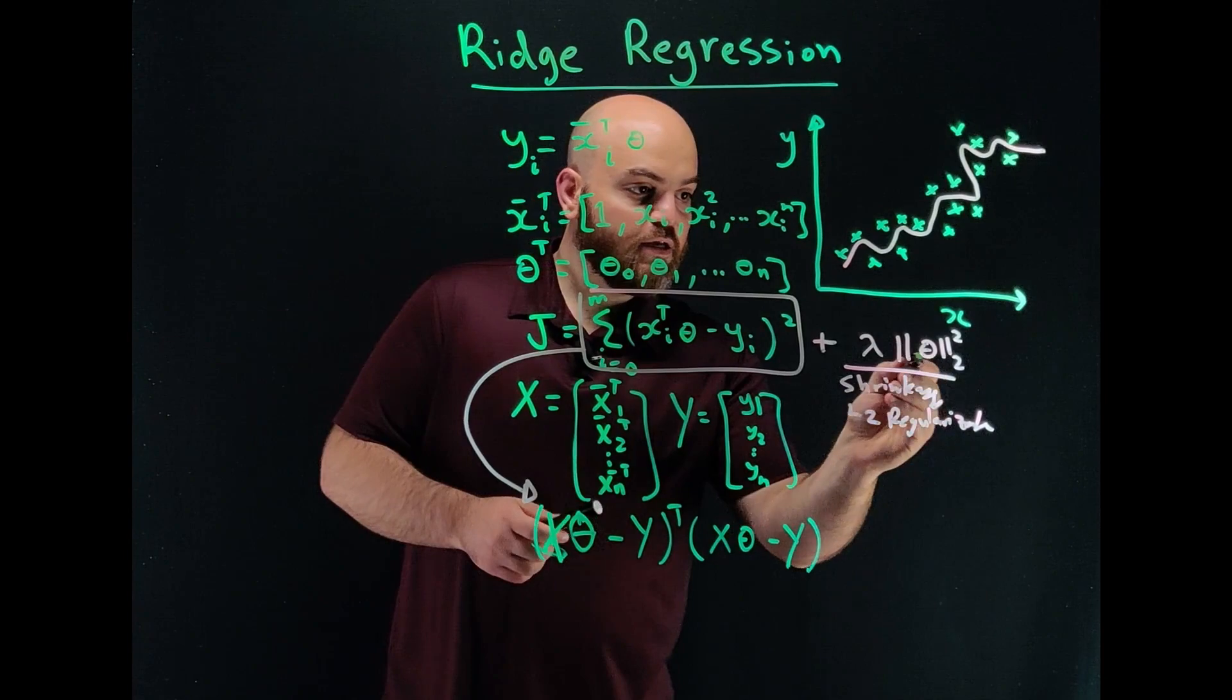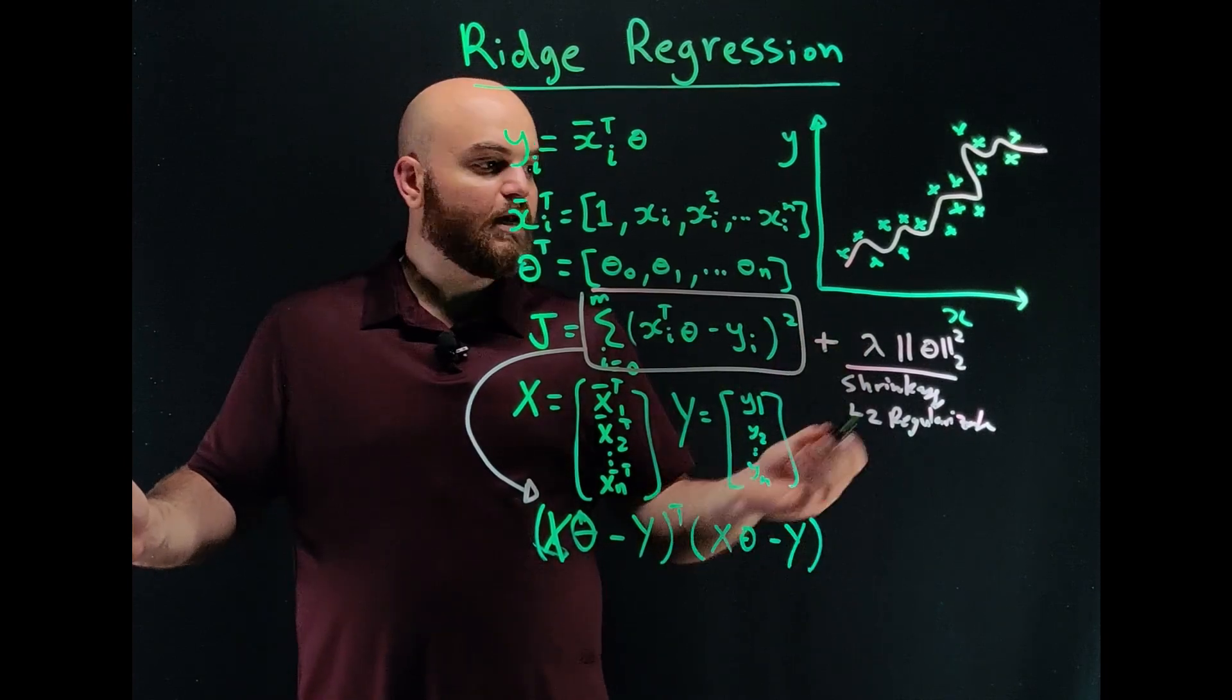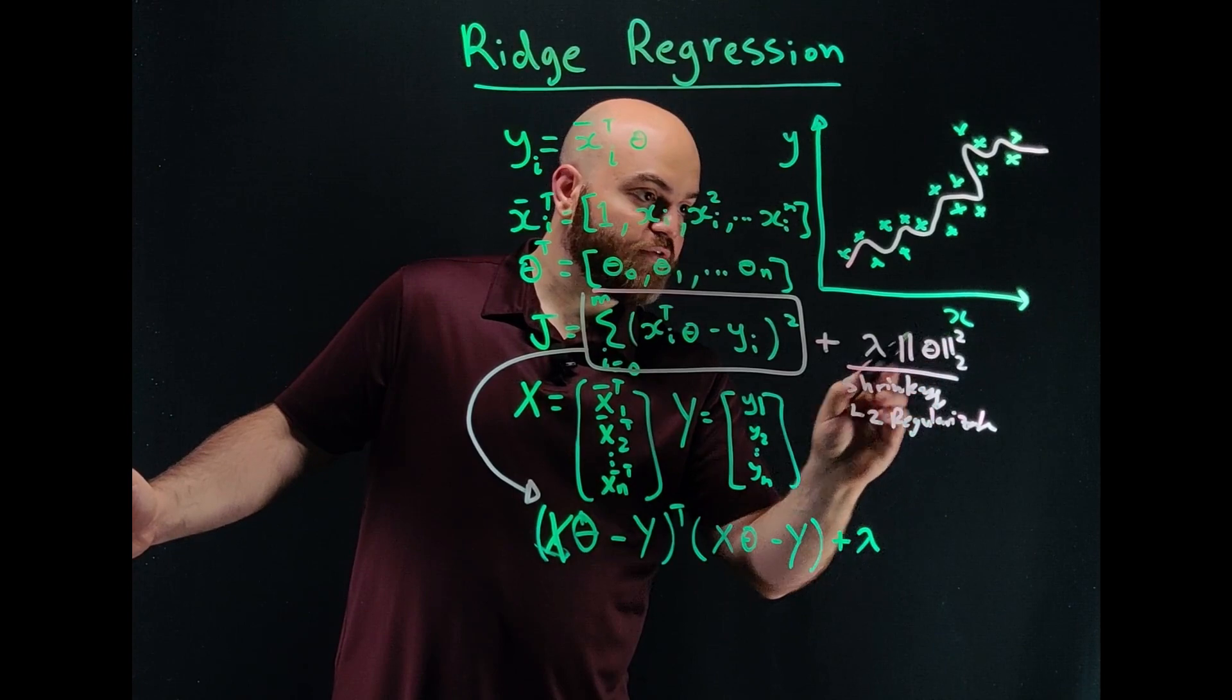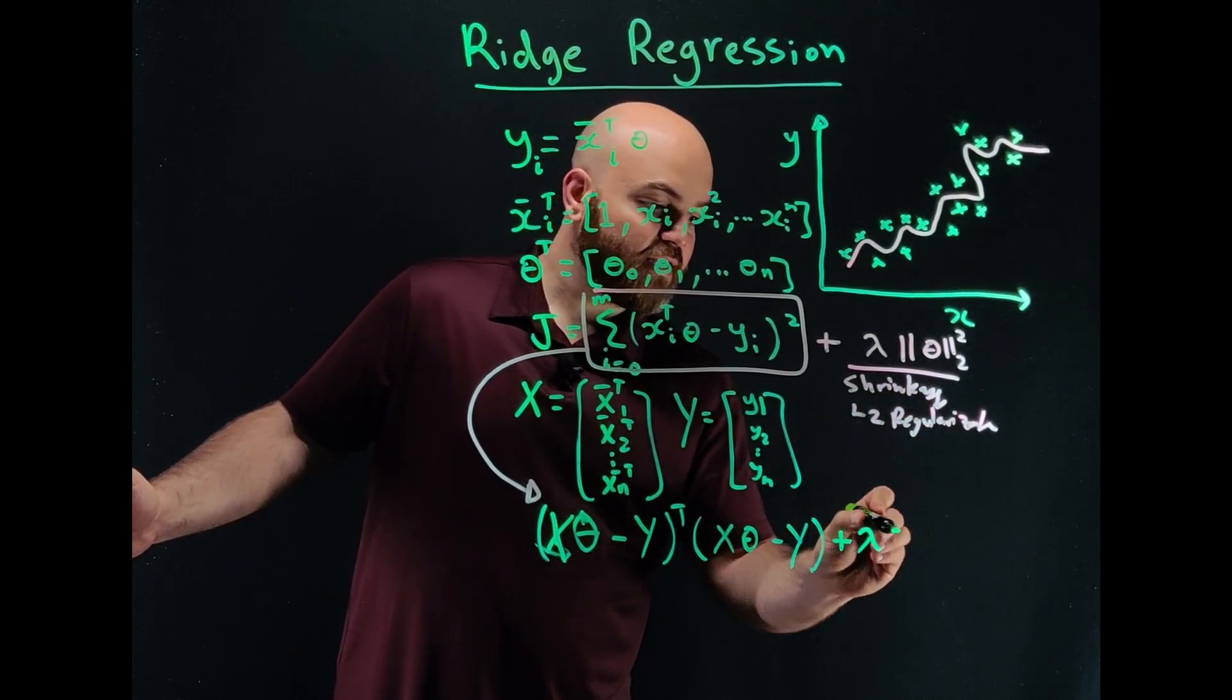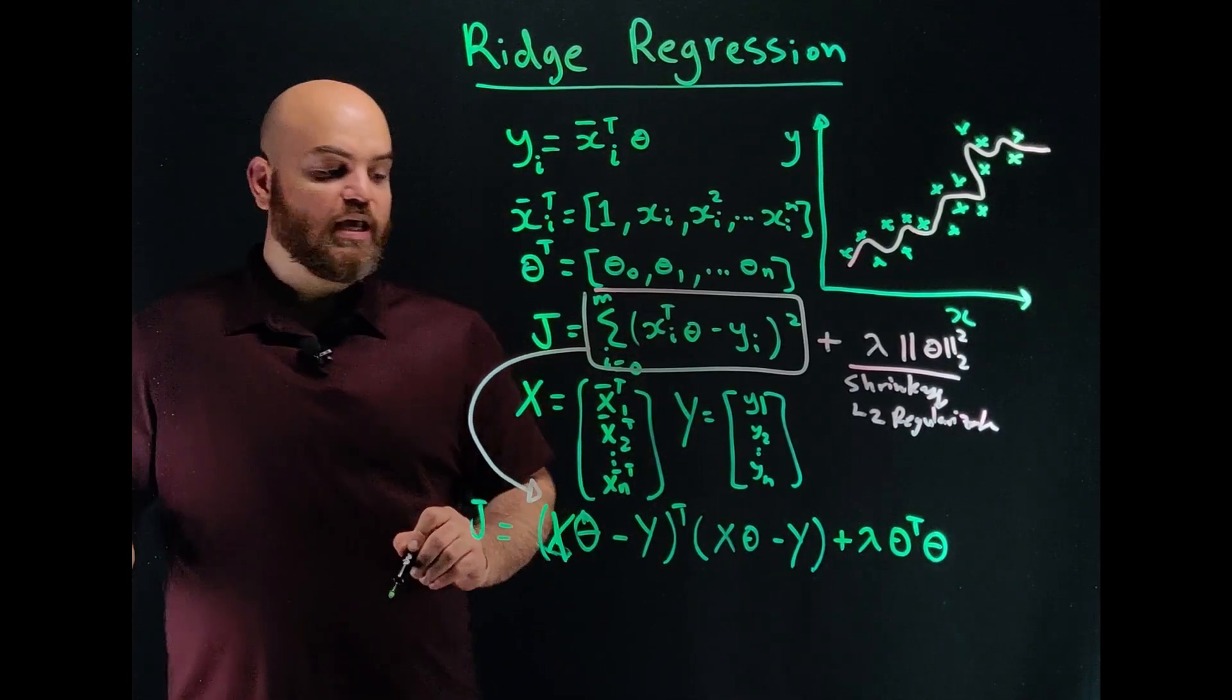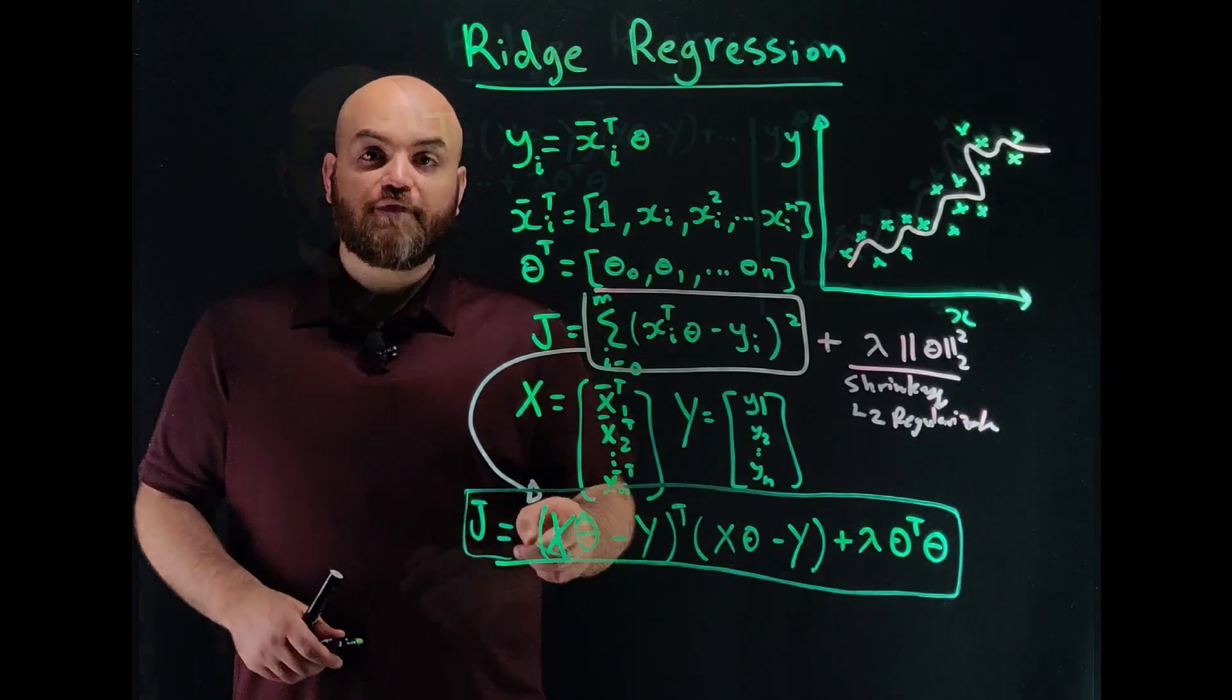And now this term right here, the second norm, if you're familiar with it, is essentially the square root of the summation of all the squared elements. So when I square that, the square root goes away. So I can write this other term as the square of a square root gives me the sum of all the elements squared, and I can write that as theta transpose theta. So this is going to give me the sum of all the elements squared. So this is my cost function, J. So I have this cost function now, and I need to find the value of theta.